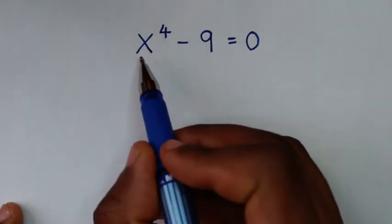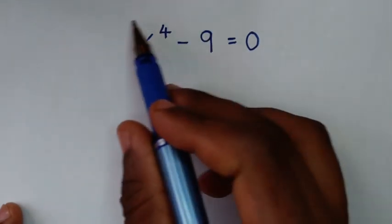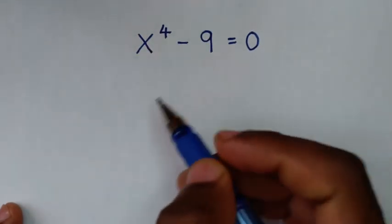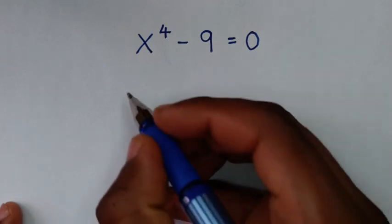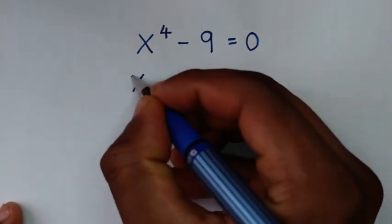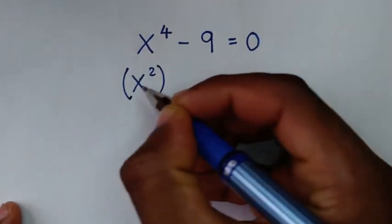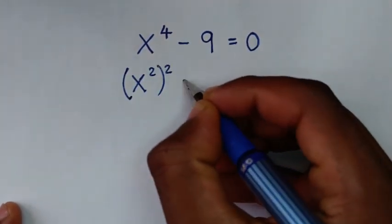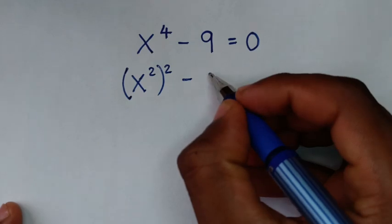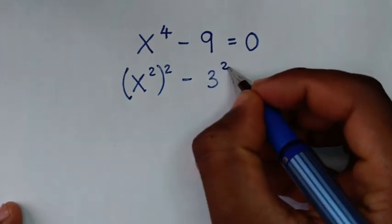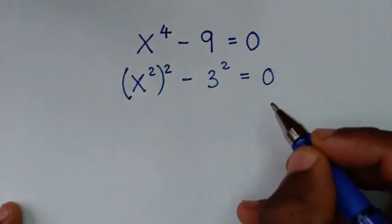In the first step, on the left side we will rewrite in the form of a perfect square. So x to the power 4 is written as x-squared, bracket, squared, minus 9 written as 3-squared, is equal to 0.